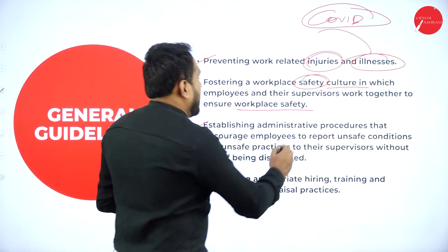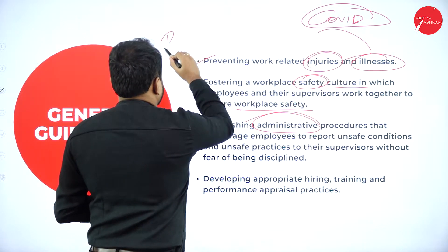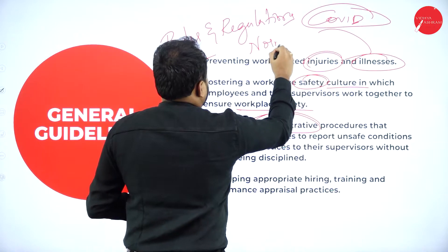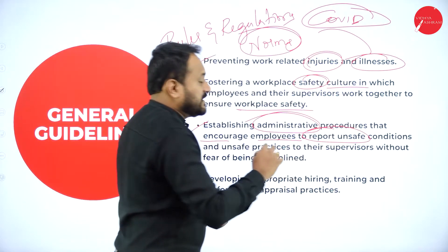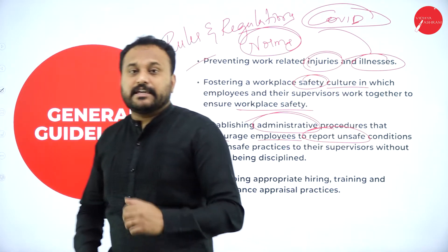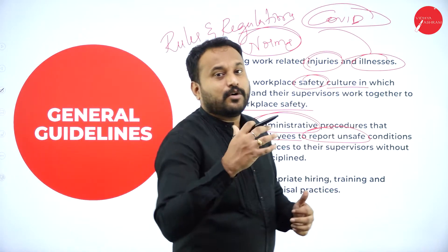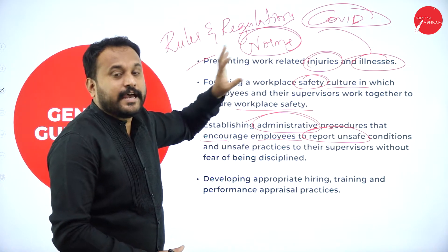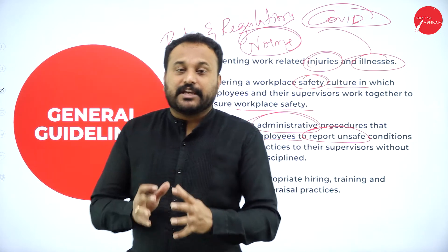Third is to establish administrative procedures. The HR manager should set rules, regulations, and norms. The norms should be set through administrative procedures that encourage employees to report unsafe conditions. We don't know everything, so we need to give employees the latitude to say what is safe and what is not, and they should report anything unsafe to the HR manager. The HR manager should use this feedback to make the organization safe and secure for employees.